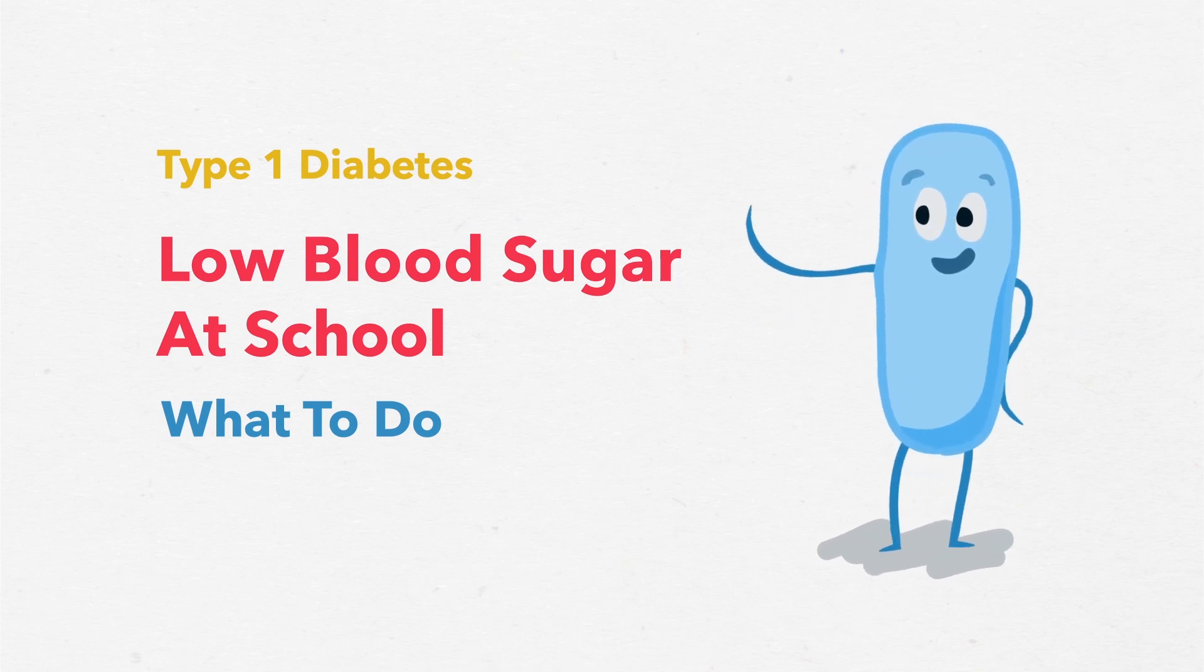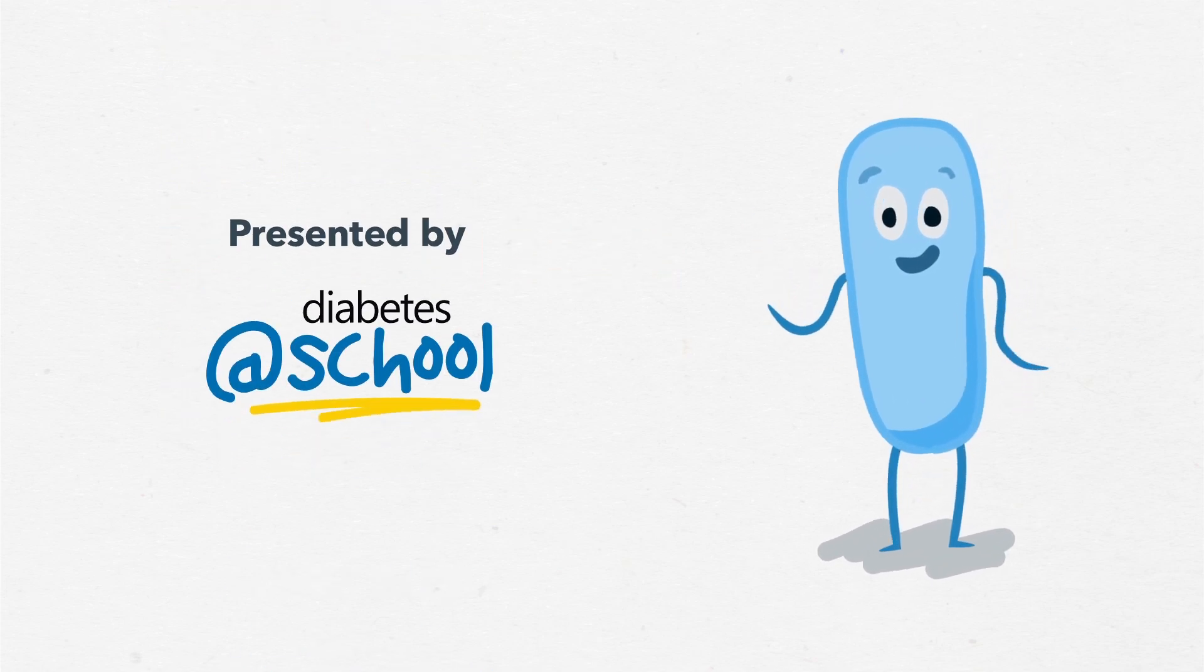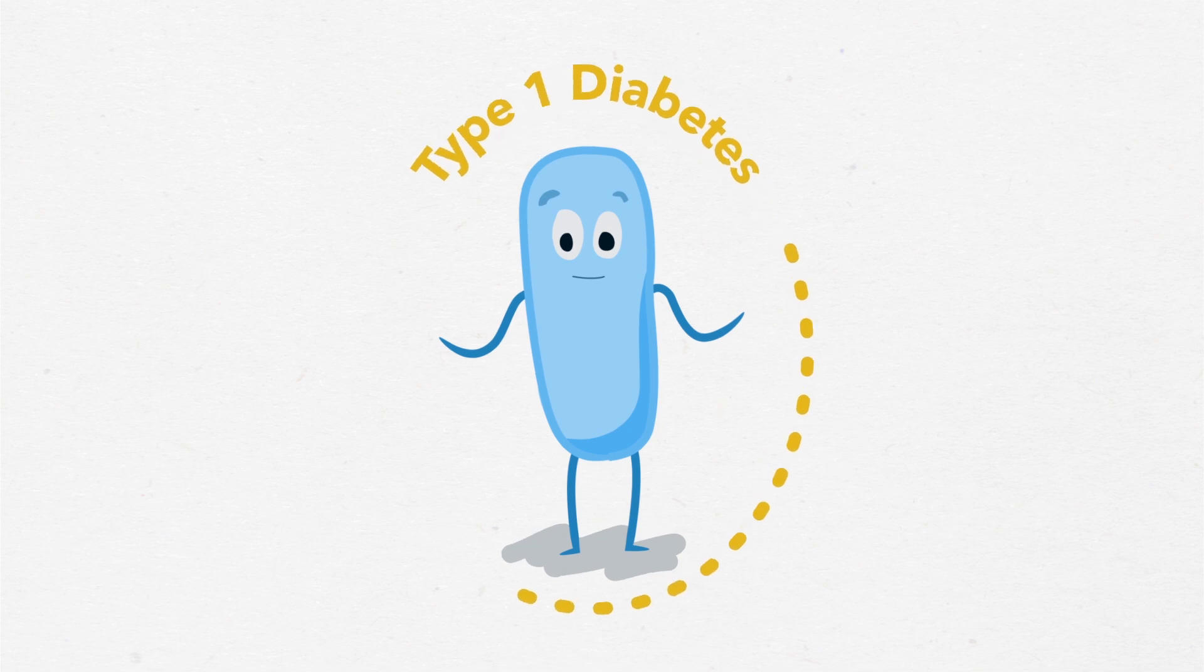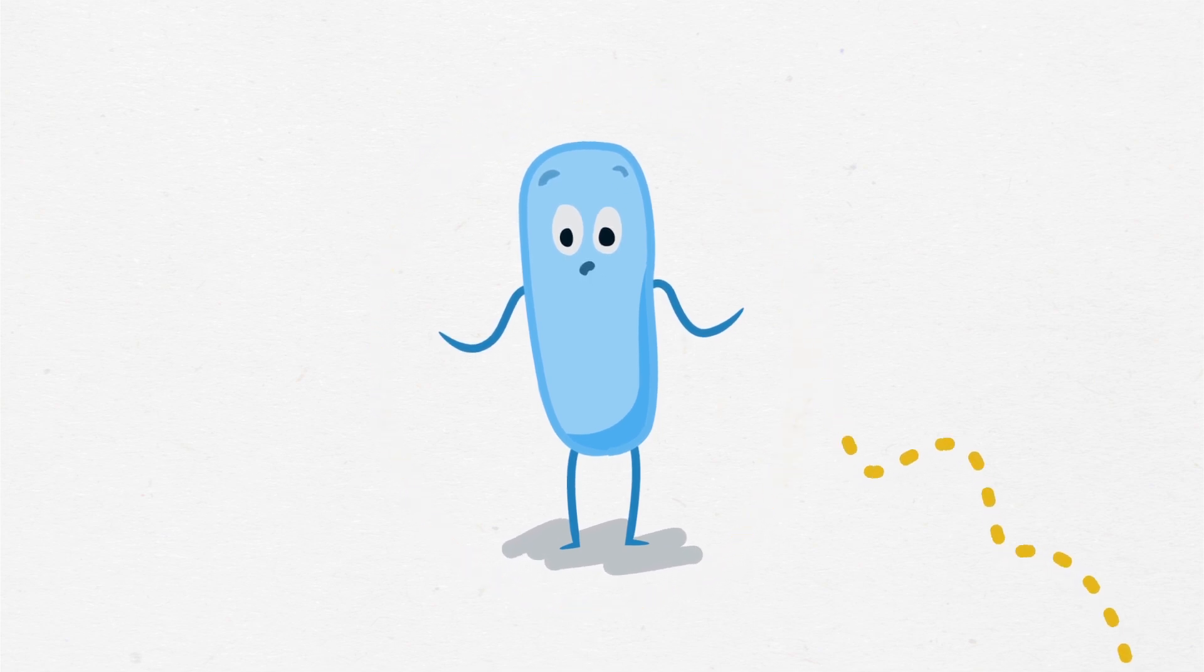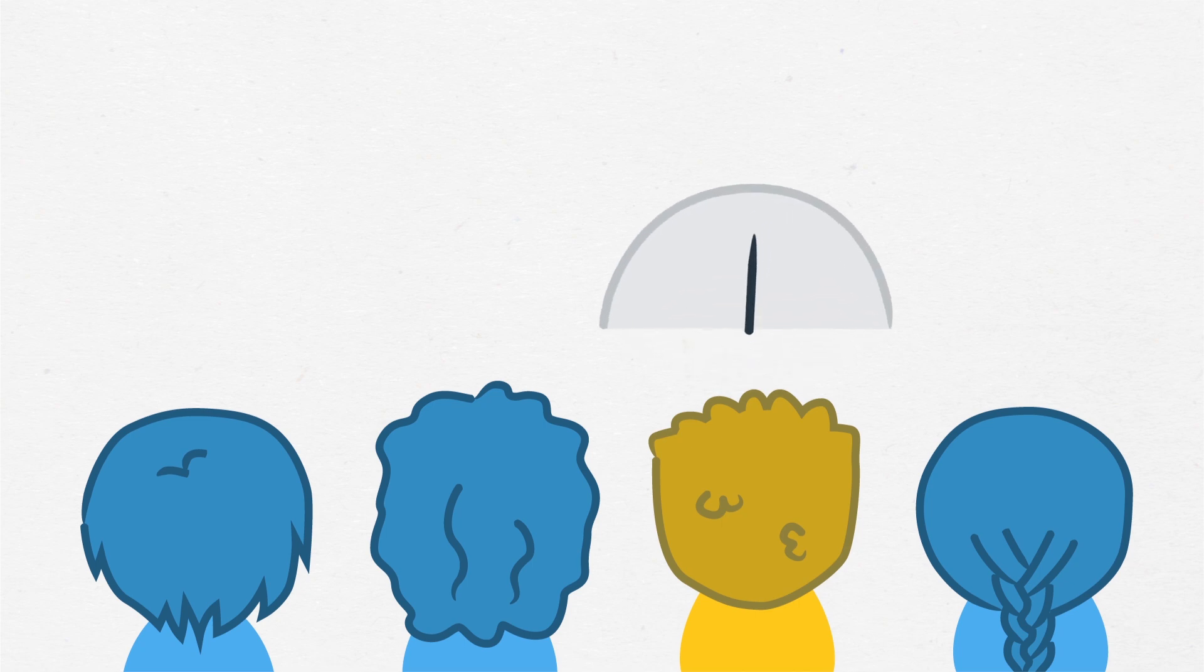Low blood sugar at school. What to do. Everyone with type 1 diabetes has low blood sugar from time to time. If you have a student with type 1 diabetes, it's important to know how to recognize low blood sugar and what to do.